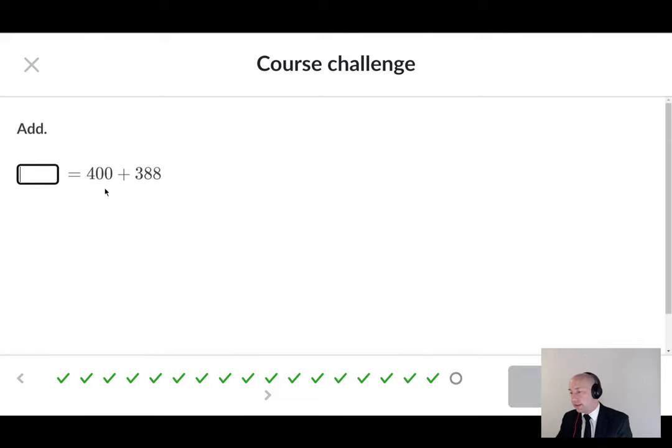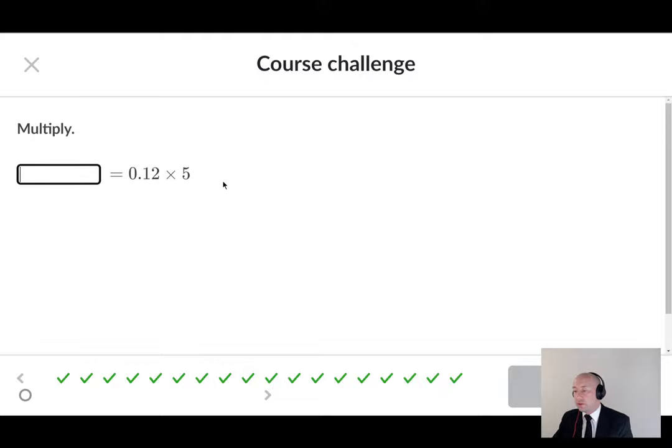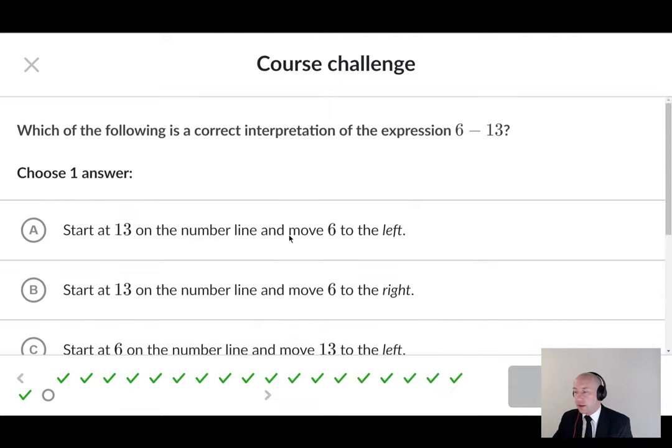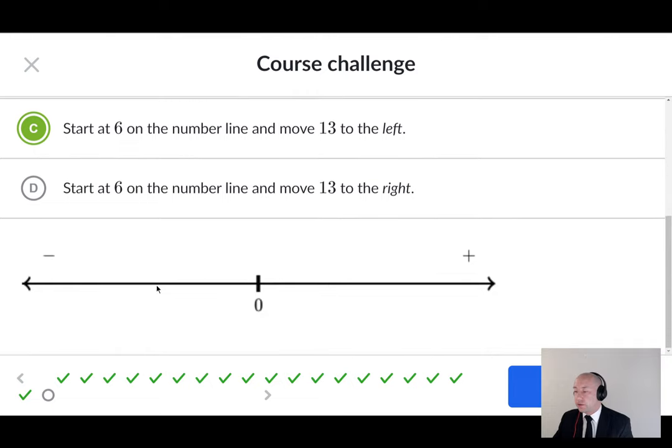400 plus 388. That's 788. Multiply 0.12 times 5. 0.12 times 5 is going to make 0.6. And that's because 12 over 100 times 5. 12 times 5 is 60. 60 over 100. That'd be 0.6. Which of the following is a correct interpretation of the expression 6 minus 13. We are going to start at 6. And we're going to move right, or excuse me, left 13 spots because of the minus sign. If you look, the only option there that has that is C. So we're somewhere over here at 6. And we're going to go left 13. We're going to end up at minus 7.